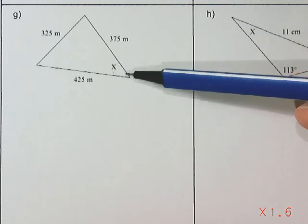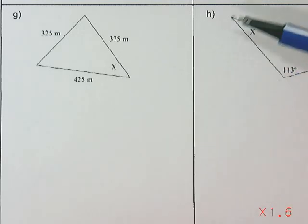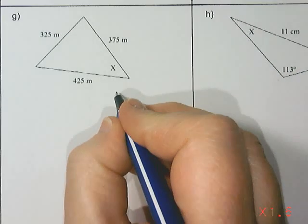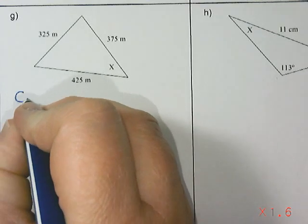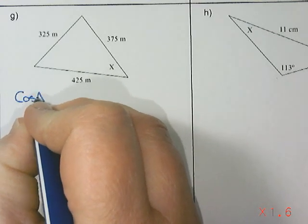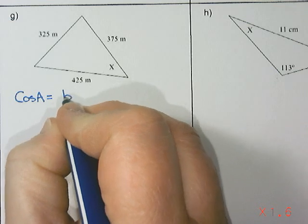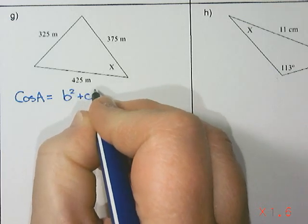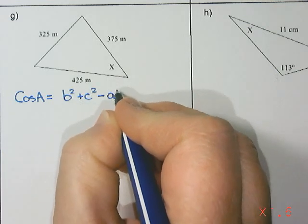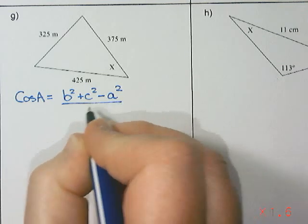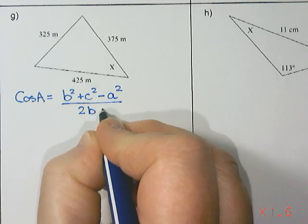In this case, we are solving for an angle. So the version of cosine law that I'm going to use is that cosine of angle A is B squared plus C squared minus A squared divided by 2BC.